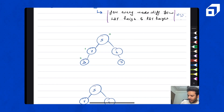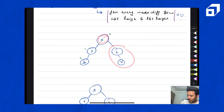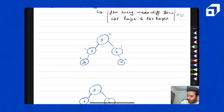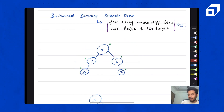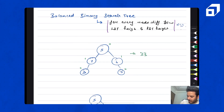Here I am measuring height in terms of number of nodes. For one node, left subtree height is 2 nodes; for another, right subtree height is 2 nodes. Similarly, for nodes 6 and 7, the difference between left and right subtree heights is 1 and 0 respectively. For no node does the difference exceed 1 — it's always less than or equal to 1. So this is a balanced binary search tree.